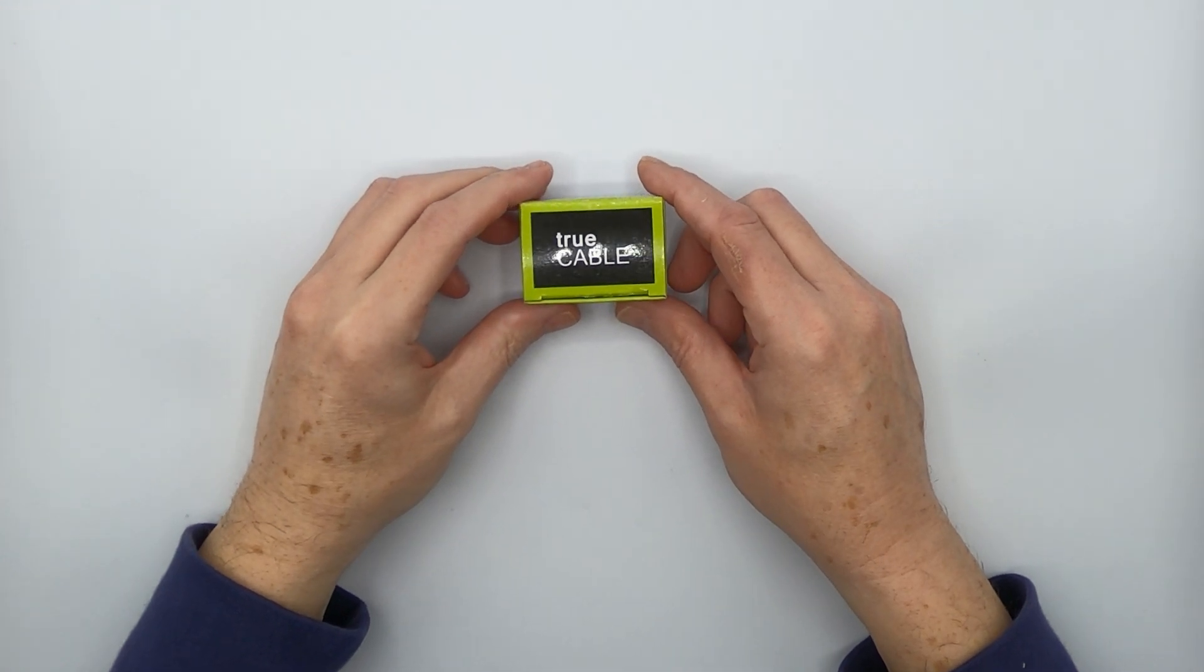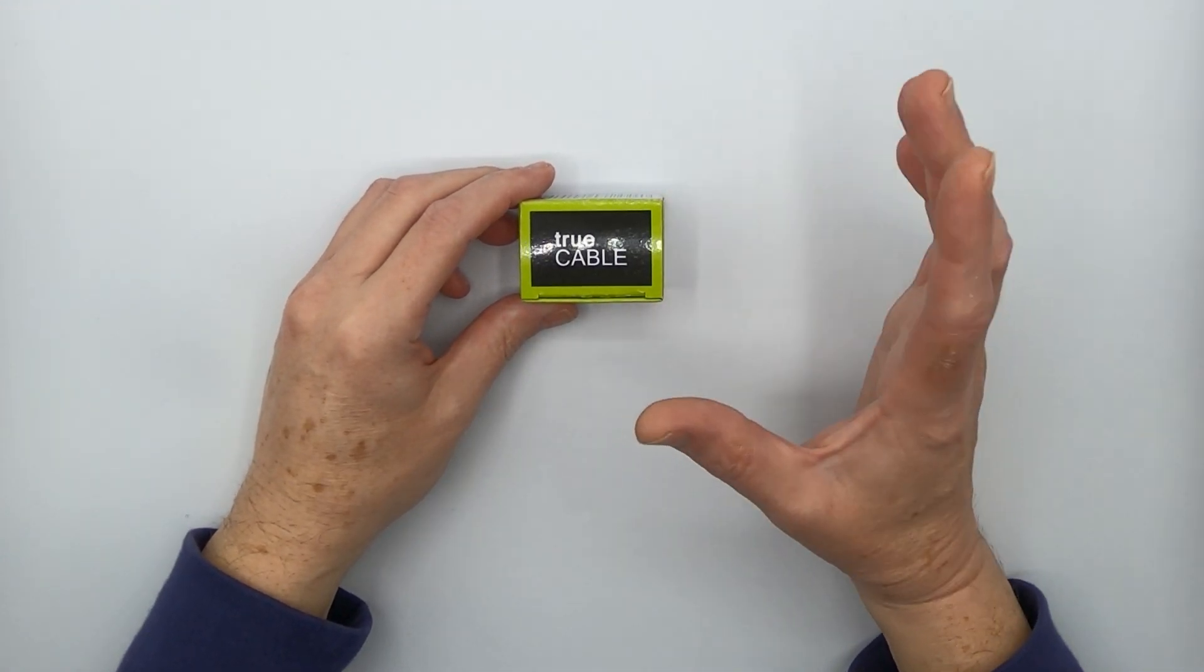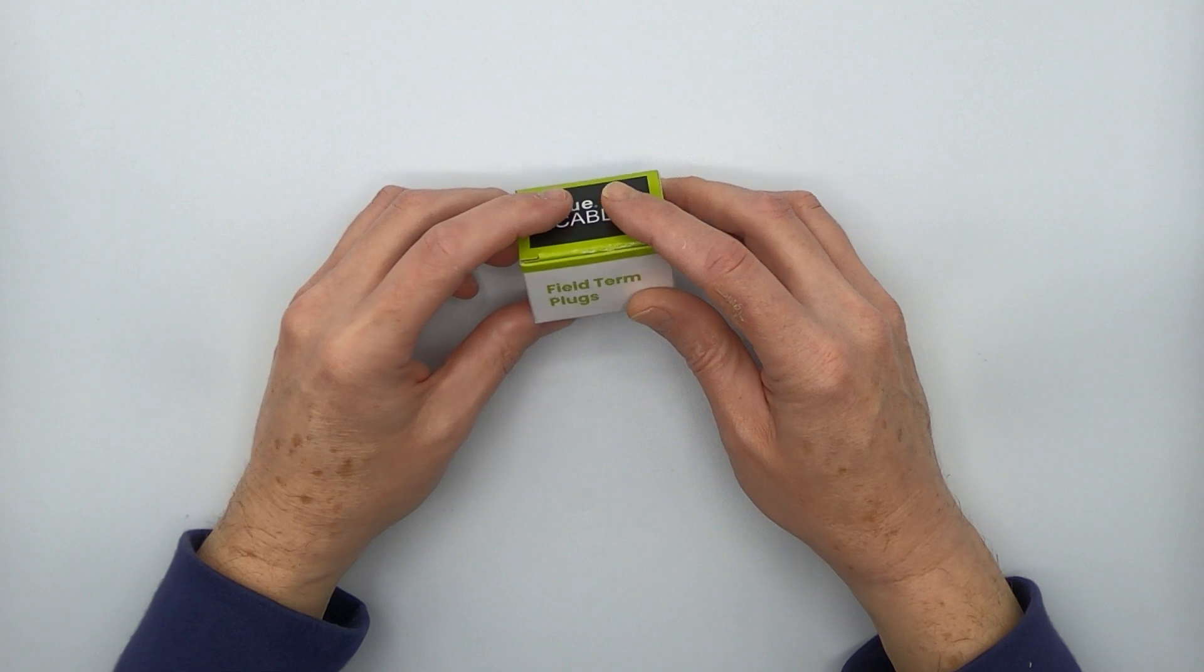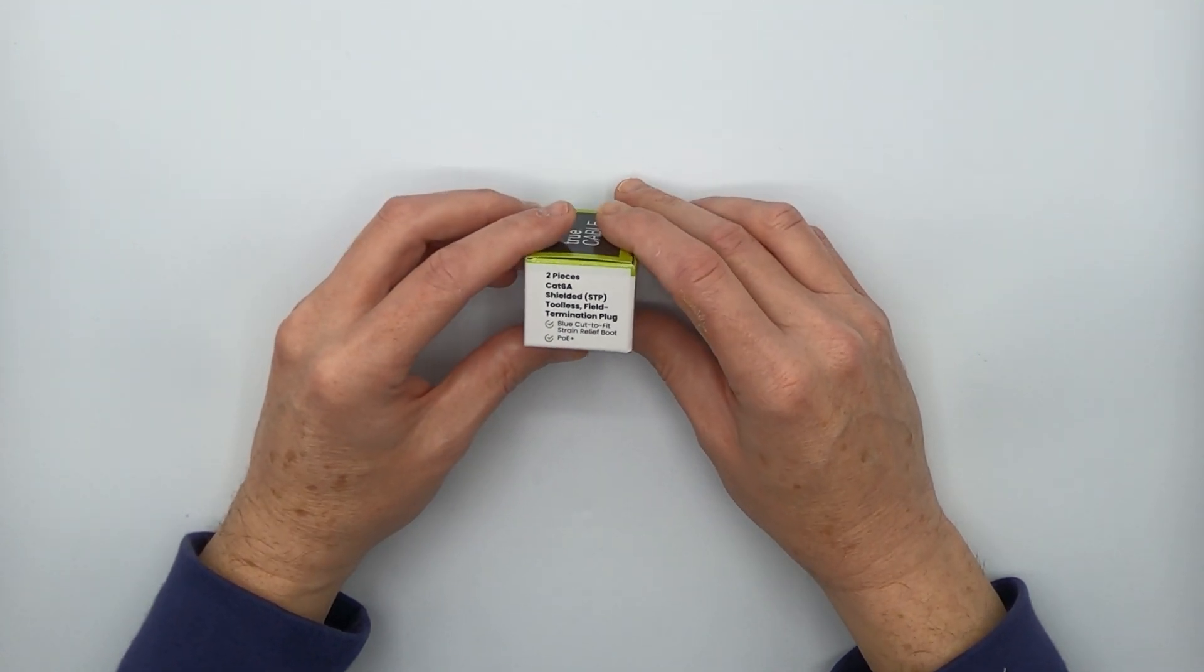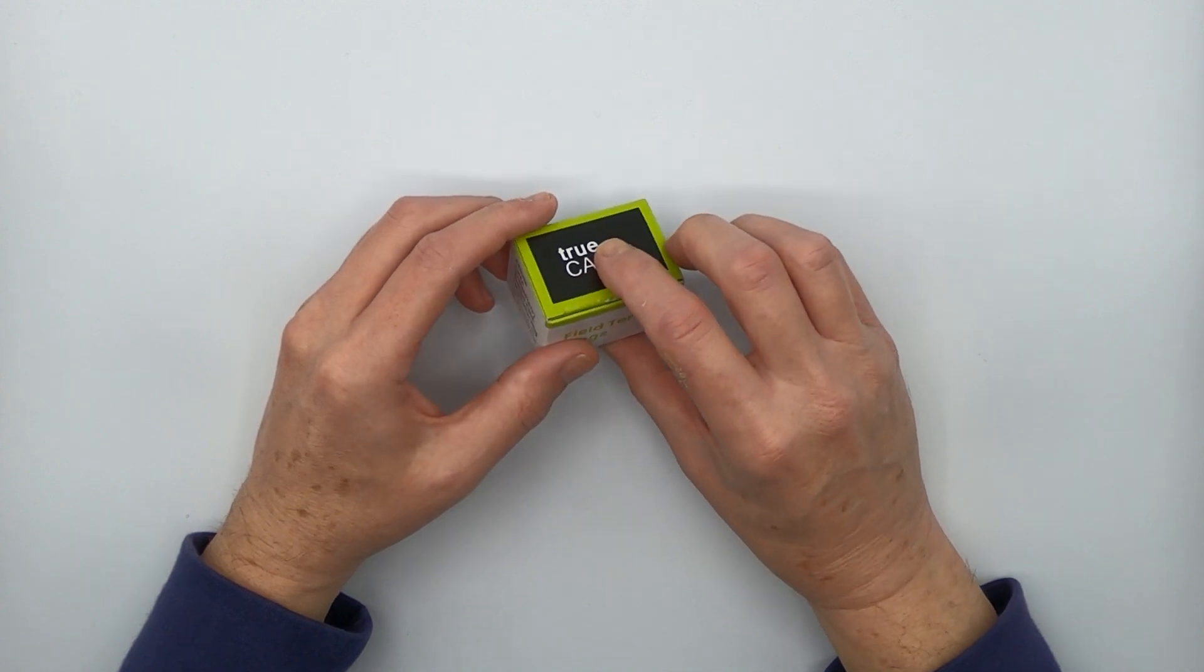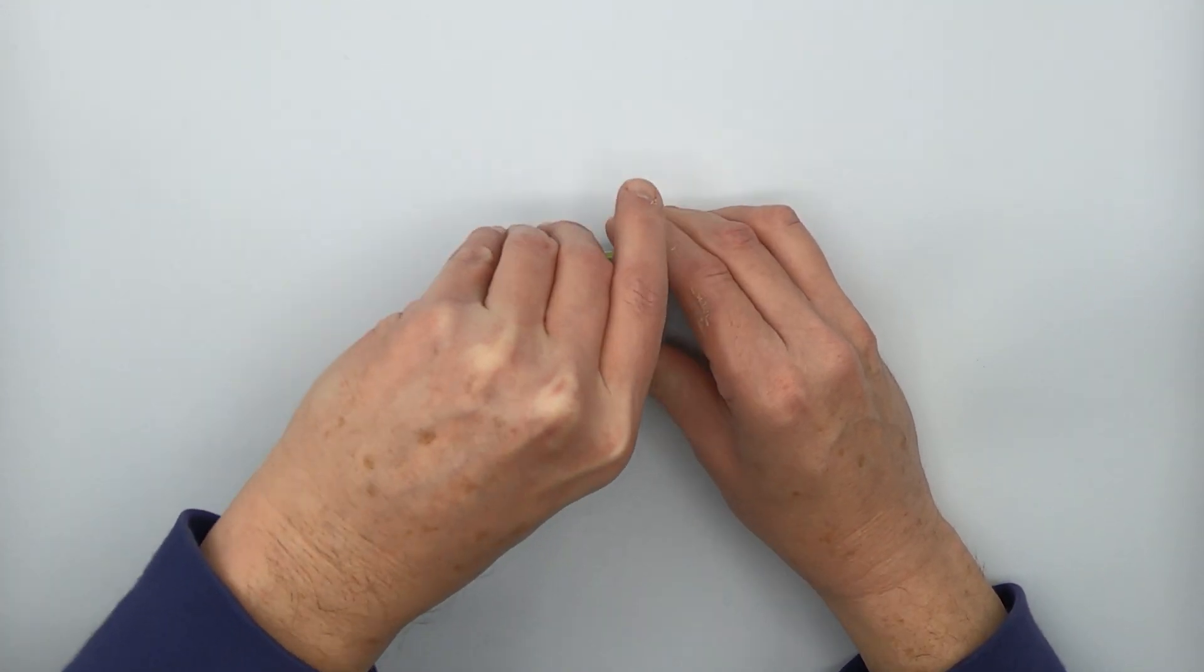Hey there, YouTubers. This is Don from True Cable coming back at you yet again, this time with field termination plugs. These are Category 6A shielded field termination plugs. Let's open up the box and see what we got here.